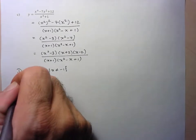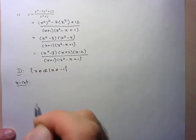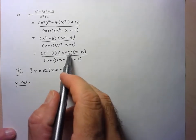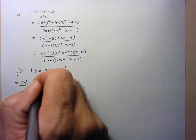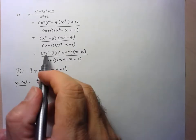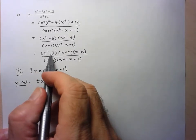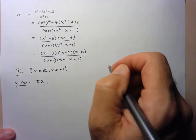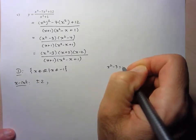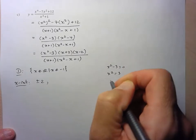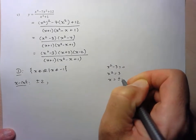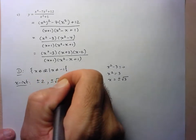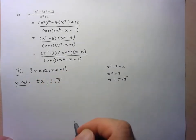Moving to x-intercepts — what makes the numerator 0? Clearly we have 2 and negative 2. While x squared minus 3 is not factorable in terms of integers, we can solve x squared minus 3 equals 0, giving x squared equals 3, so x equals plus or minus root 3. So we also have plus or minus root 3 as x-intercepts.